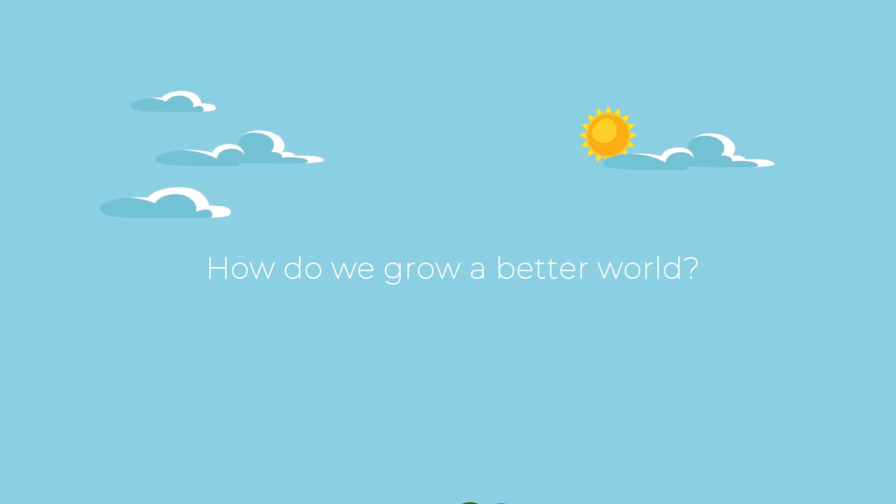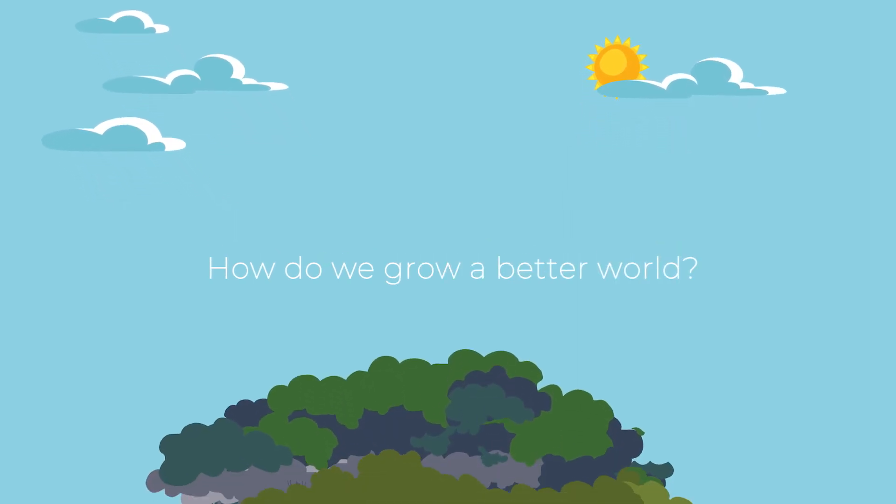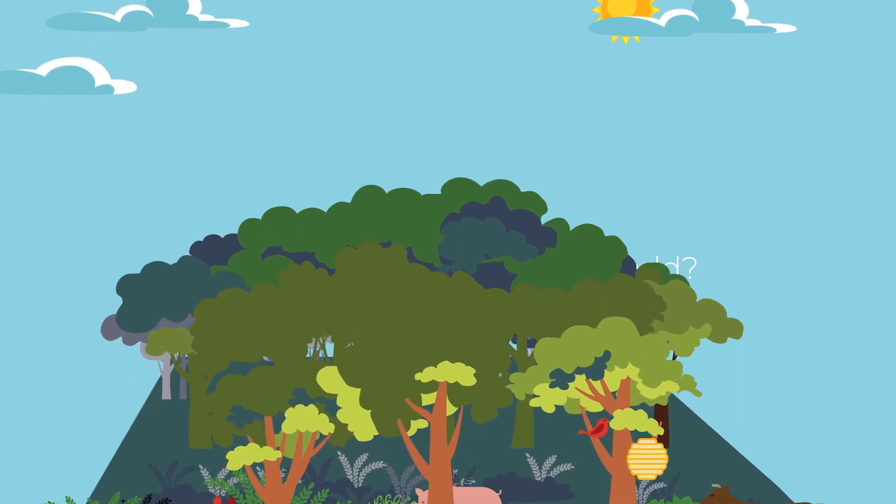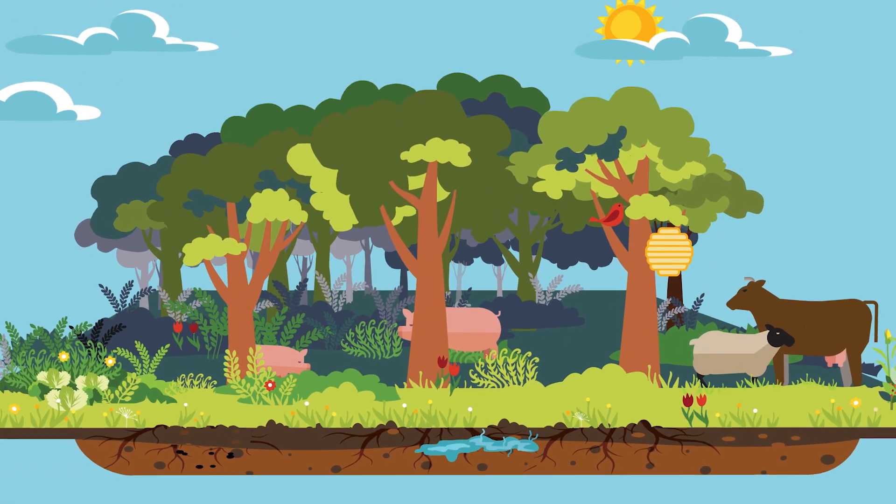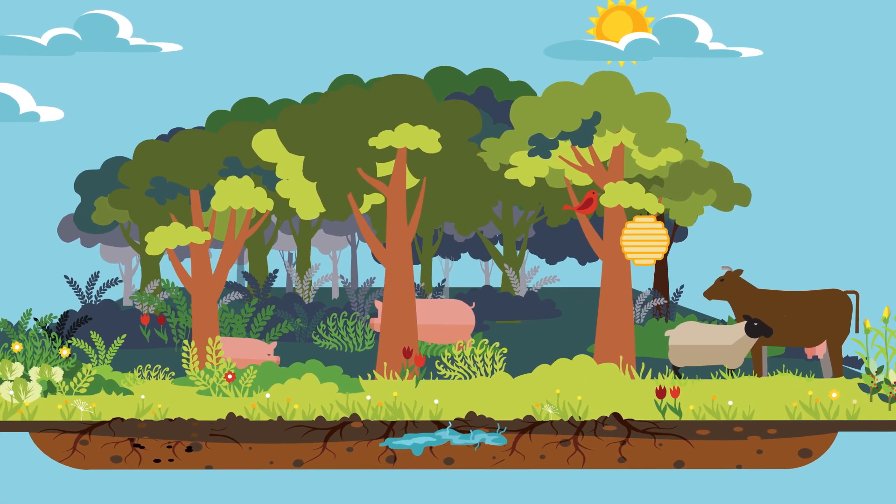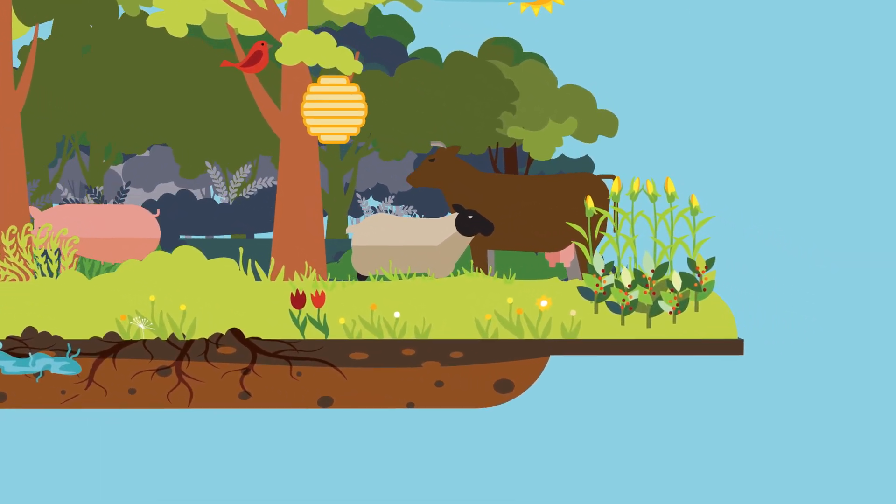How do we grow a better world? It starts with food. Agriculture has damaged our earth more than anything else, which is why now, more than ever, we need to farm sustainably.